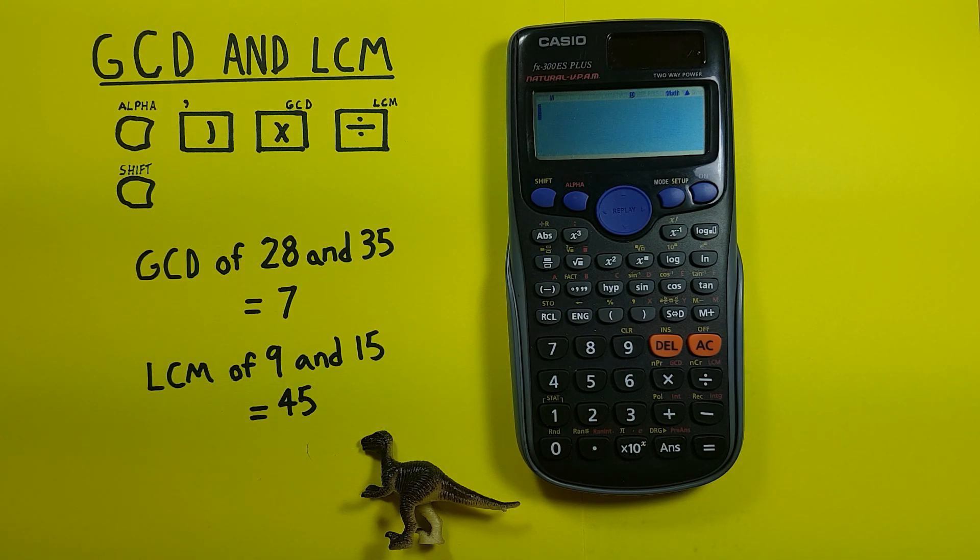These functions are the GCD or greatest common divisor and LCM or least common multiple functions which are somewhat unique. I haven't seen them very often but they can be pretty handy and it's cool that this calculator has them.